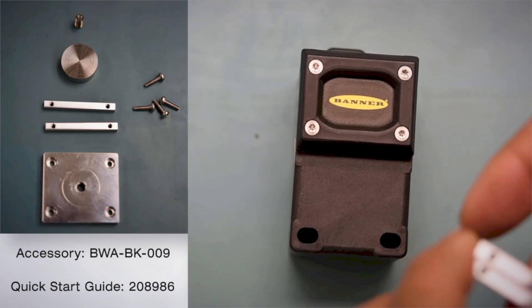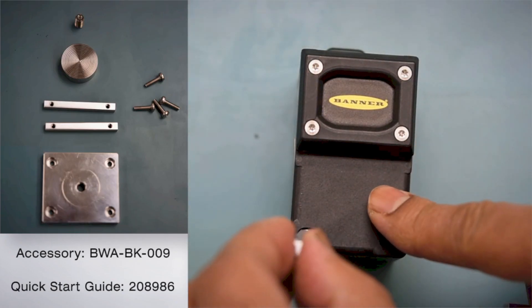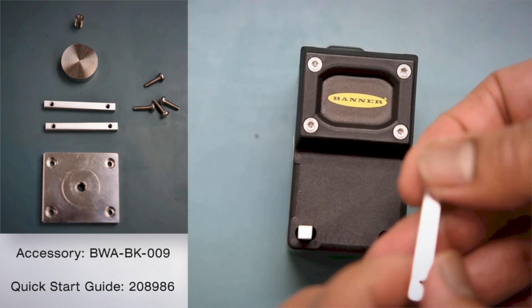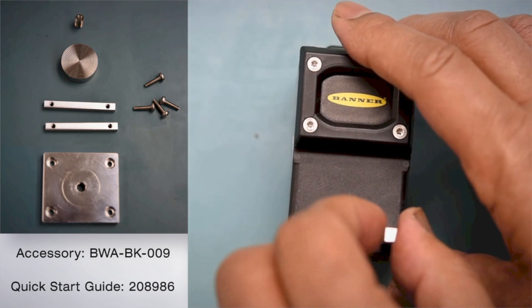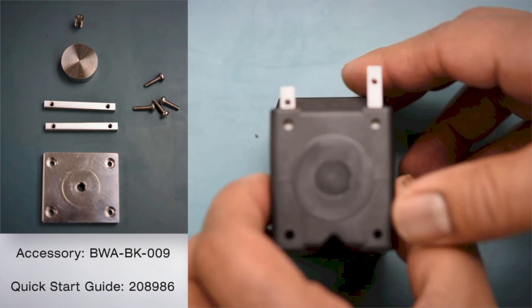These are the parts that you will receive. We're going to start off by inserting the screw retainers. Align the screw holes with the bottom of the Q45.